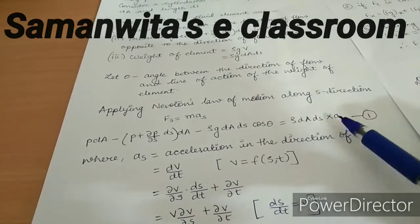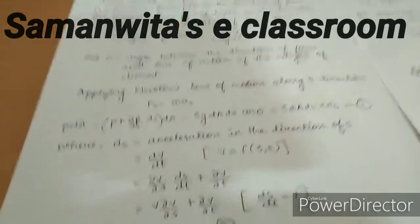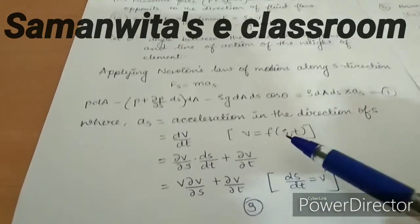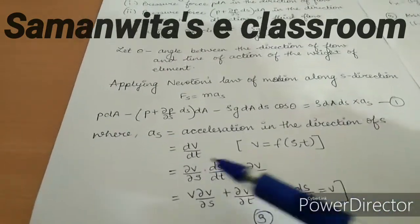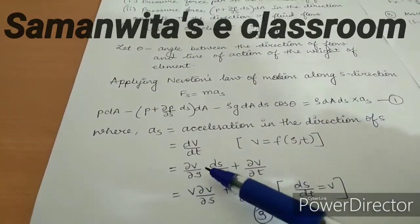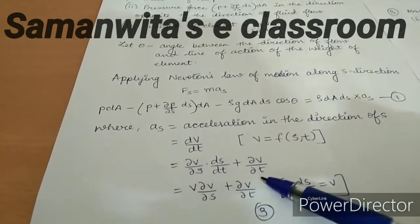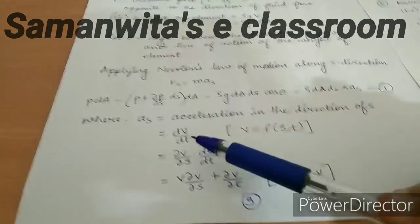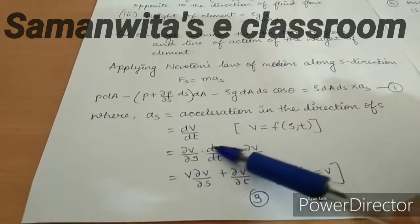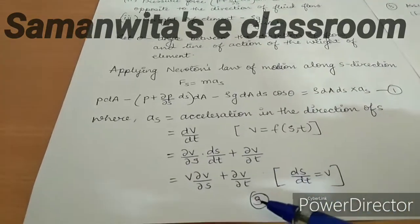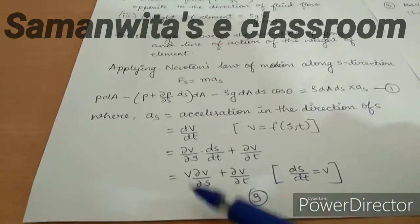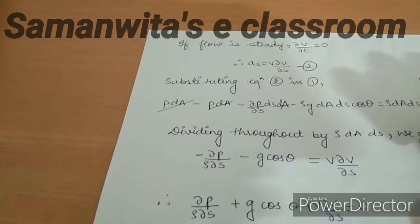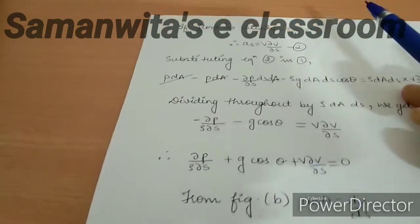The acceleration as in the s-direction is dv/dt. Since velocity is a function of both space s and time t, we expand using the chain rule: as = (∂v/∂s)·(ds/dt) + ∂v/∂t. Since ds/dt = v (velocity), this becomes as = v·(∂v/∂s) + ∂v/∂t. For steady flow, ∂v/∂t = 0, so as = v·(∂v/∂s).